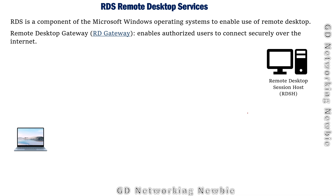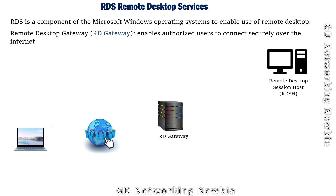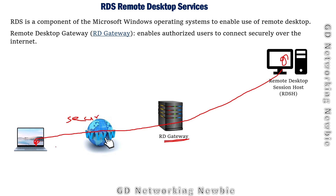Remote Desktop Gateway is a role which enables authorized users to connect securely over the internet. It allows remote users — users at a distance — to access the server remotely over the internet, providing secure communication via HTTPS or SSL. RD Gateway supports RDP, which is the Remote Desktop Protocol, used over HTTPS, the secure version of HTTP.